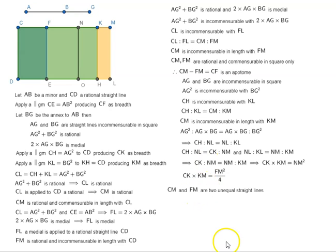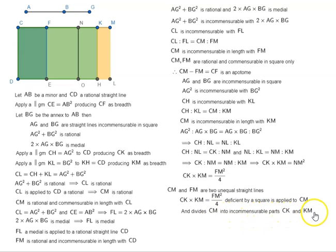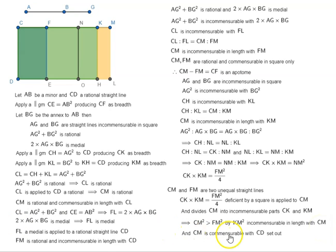We have CM and FM as two unequal straight lines, and CK·KM = FM²/4. So a figure deficient by a square applied to CM divides CM into incommensurable parts CK and KM. This means CM² exceeds FM² by a square on KM, which is incommensurable in length with CM. And CM is commensurable with the rational line CD set out. Therefore CF, which is CM minus FM, is a fourth apotome, satisfying all the conditions specified in the definition.